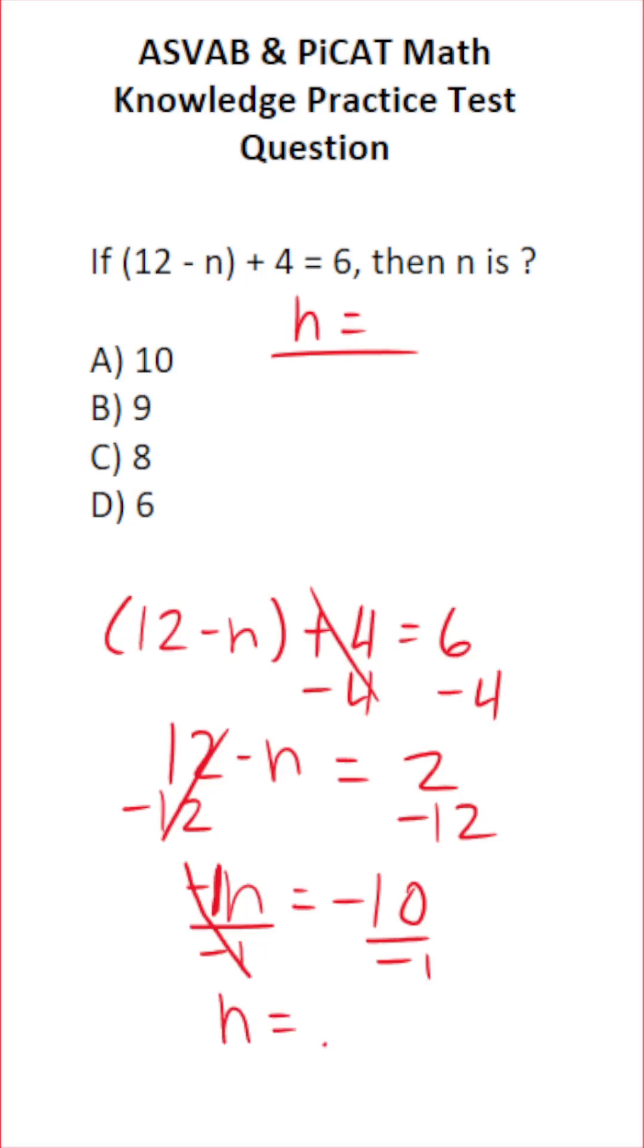Negative 10 divided by negative 1. A negative divided by a negative is a positive. So negative 10 divided by negative 1 is just positive 10.